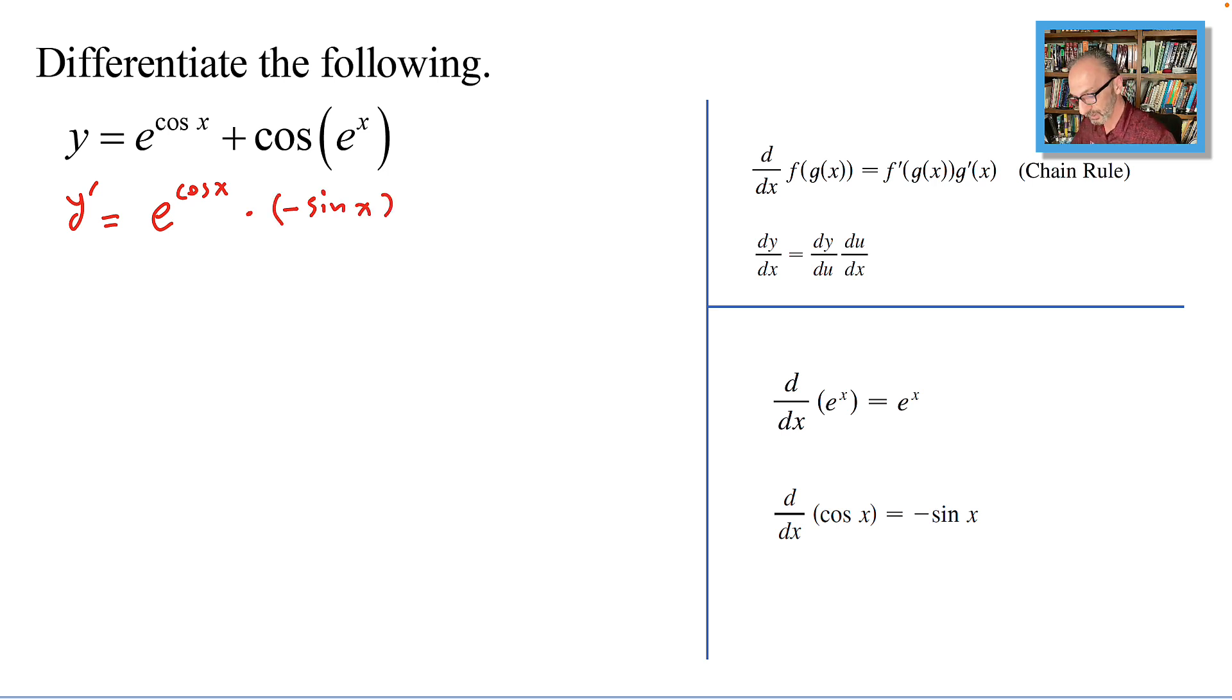plus the derivative of cosine is a minus, so let's put a minus sine e to the x, times the derivative of the inside part, which is e to the x.